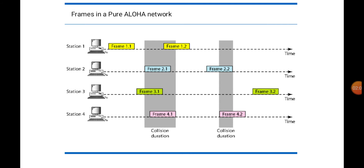In a Pure Aloha network, Pure Aloha is the earliest random access method — it is the original Aloha protocol. The modified version is Slotted Aloha. The idea is that each station sends a frame whenever it has a frame to send. Since there is only one channel to share, there is a possibility of collision between frames.